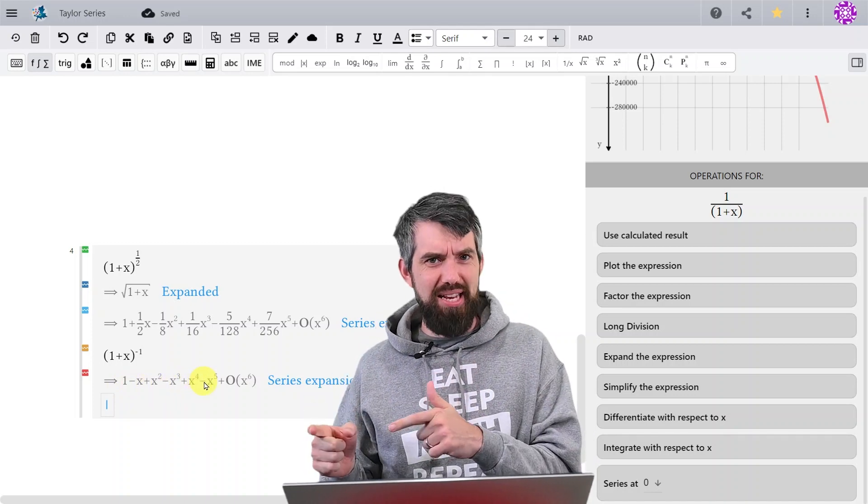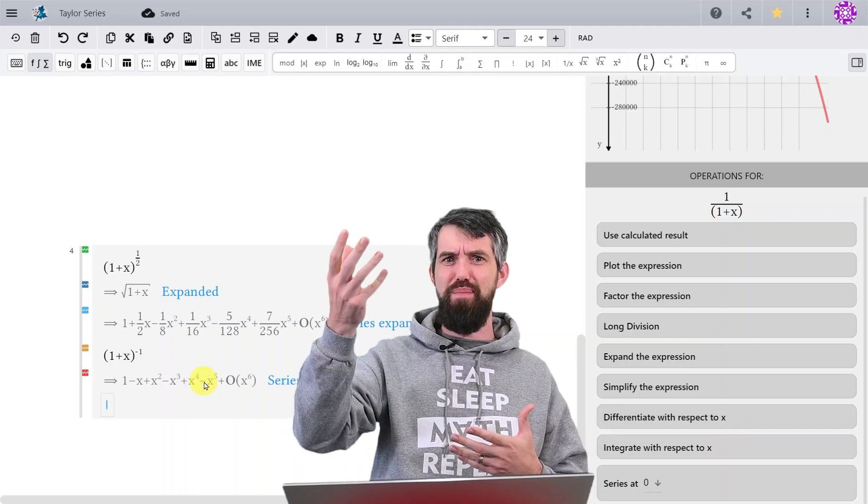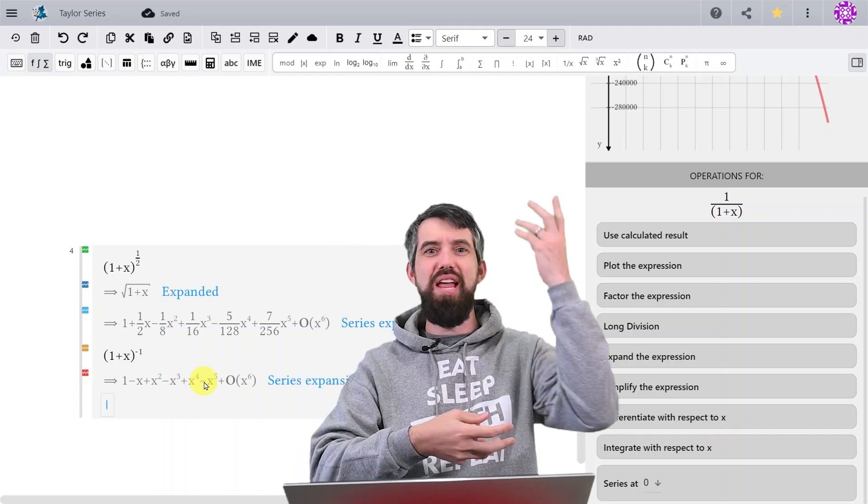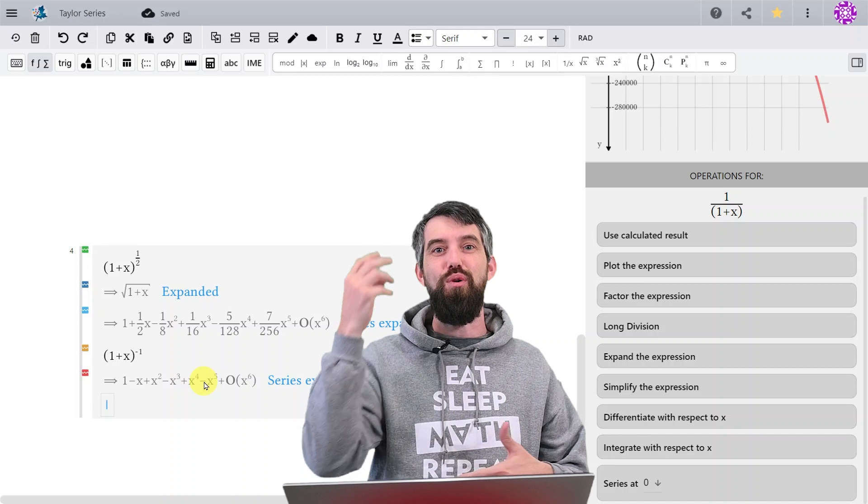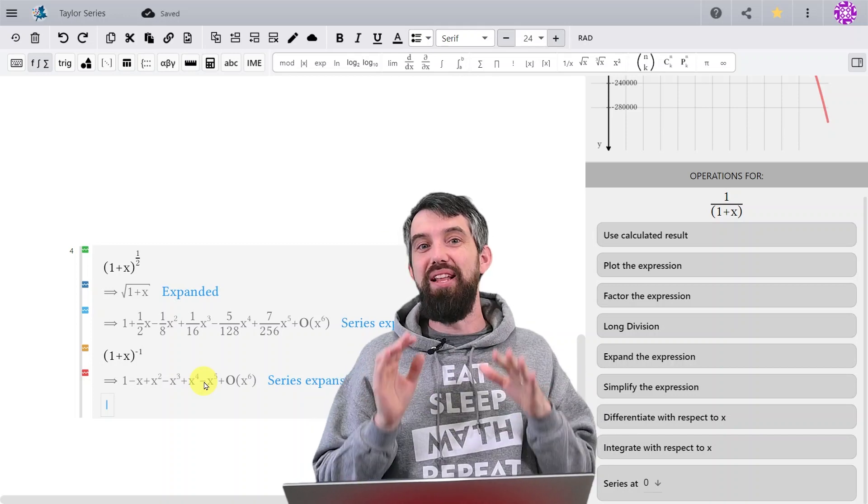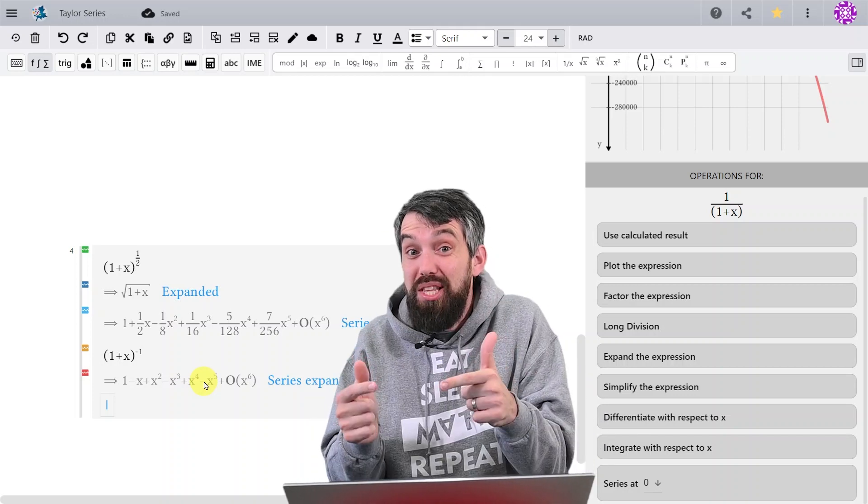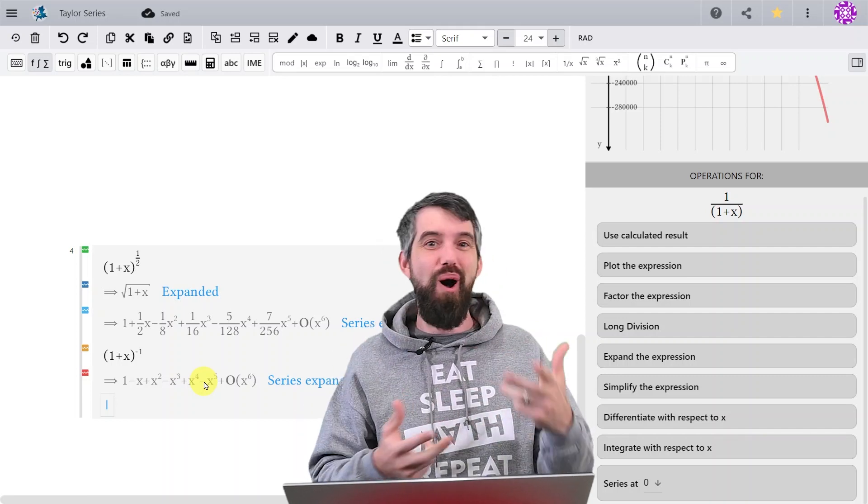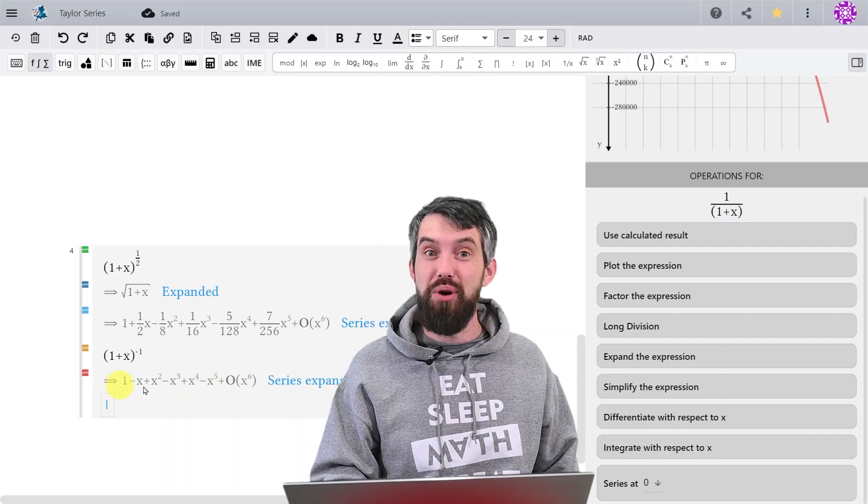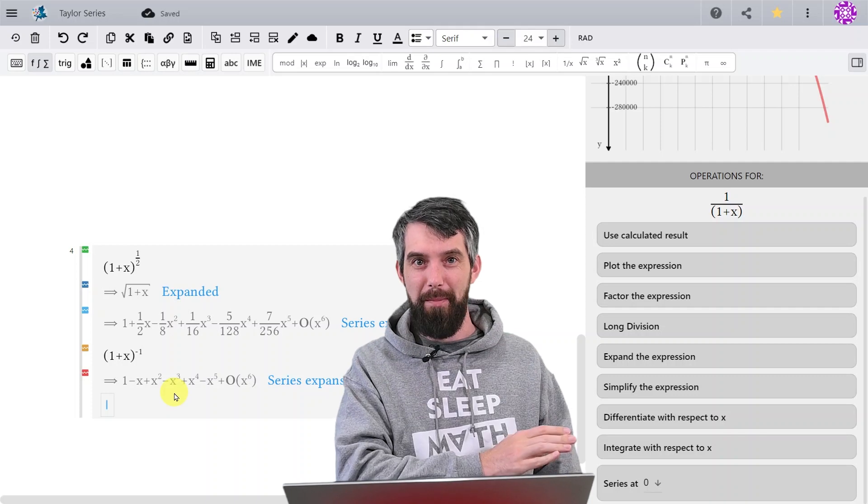And that should sort of make sense, because if I think about the derivative to the power of minus 1, it's going to bring a minus 1 down, then a minus 2, then a minus 3, then minus 4, then minus 5. That's exactly going to cancel the factorials that you had on the bottom, except for whether there's an even or an odd number of minus signs. So all these coefficients are just plus or minus 1.